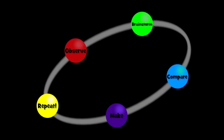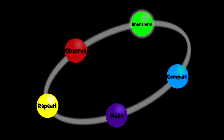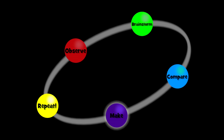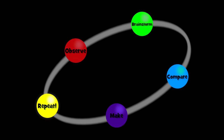Let's recap the process we took. We made an observation that it's difficult to practice volleyball by yourself. We brainstormed solutions to that problem. And we compared ideas to pick our favorite one. We made prototypes to test those solutions. And then we had to repeat some of those steps in order to find even better solutions. That's how we came up with a way to solve the problem of it being difficult to practice volleyball on your own.